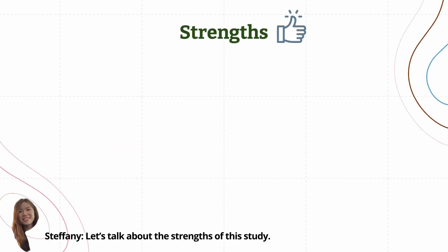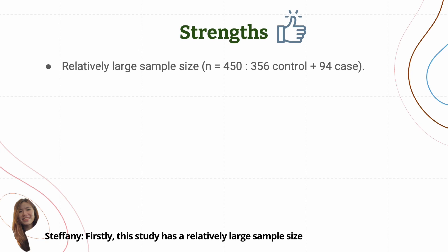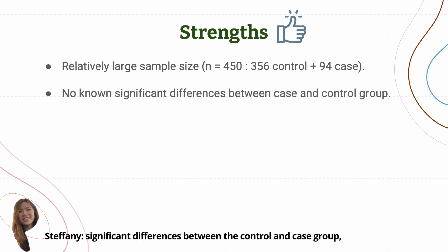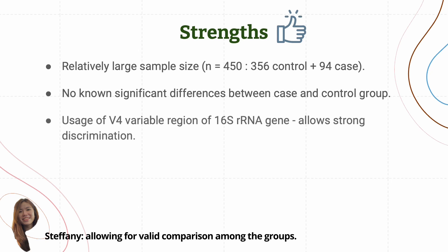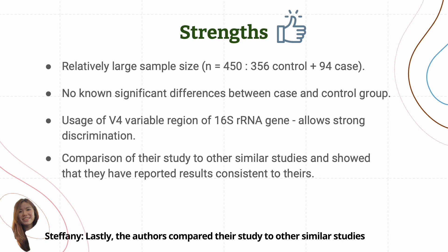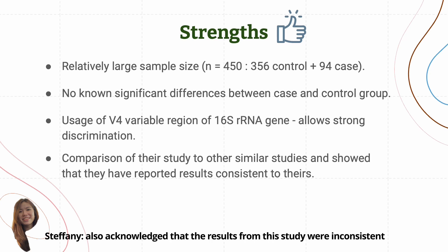Let's talk about the strengths of this study. Firstly, this study has a relatively large sample size compared to other similar case control studies, which increases the reliability and power for detection of differences. Secondly, there are no known significant differences between the control and case group, allowing for valid comparison. Thirdly, the selection to use the V4 variable region of the 16S rRNA gene provides strong discrimination between most bacterial species. Lastly, the authors compared their study to similar studies which reported consistent results, and also acknowledged inconsistencies with other studies and provided reasons for the discrepancies.